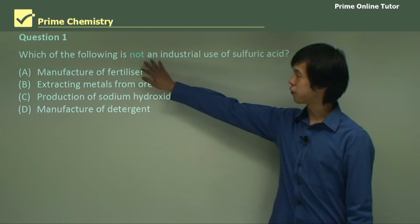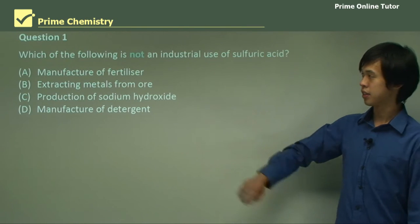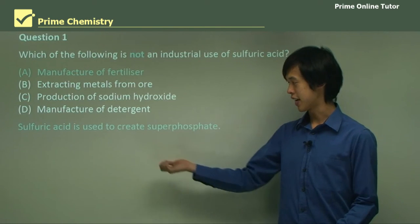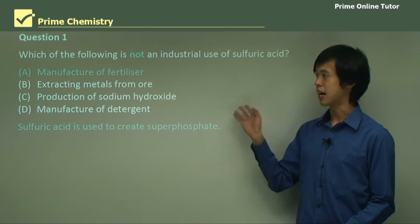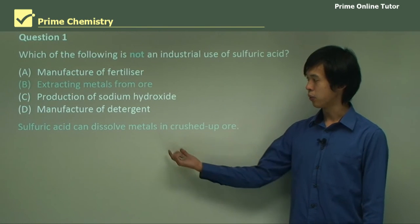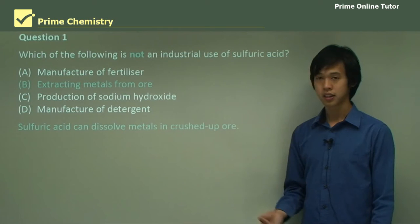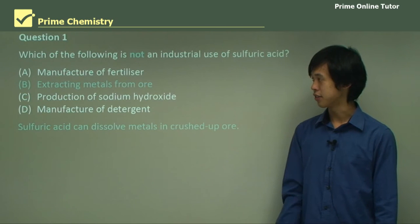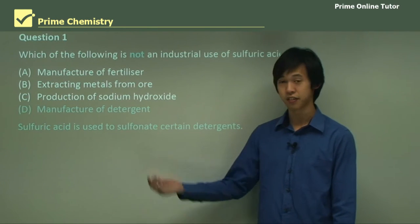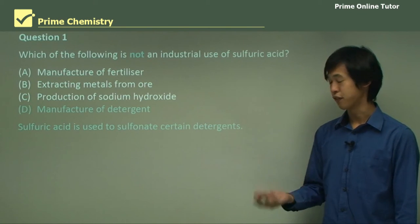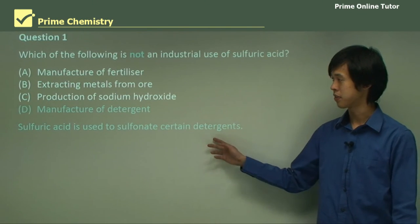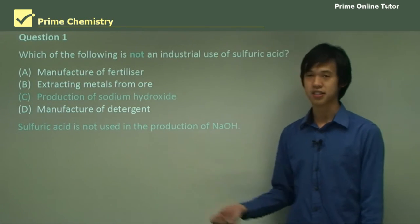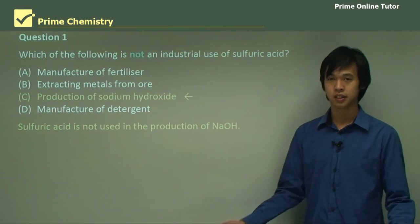Question 1: Which of the following is not an industrial use of sulfuric acid? Option A — manufacture of fertilizer — is wrong because sulfuric acid is used to make superphosphate. We know it's used to dissolve metals from ores. We know it's used in detergent manufacture via sulfonation. So the answer is D — the production of sodium hydroxide — because sulfuric acid is obviously not used in that process.